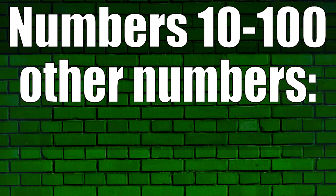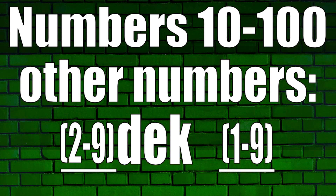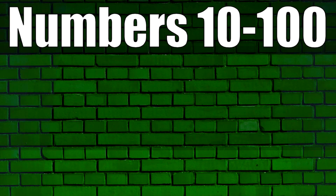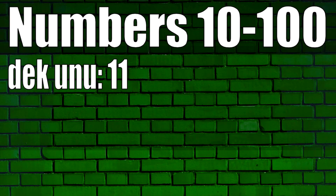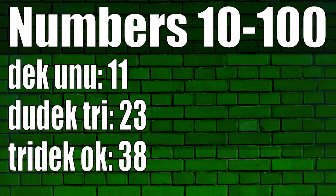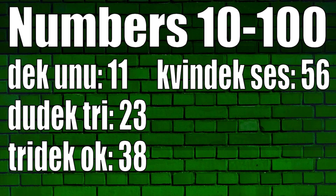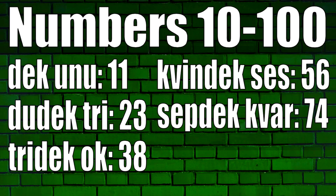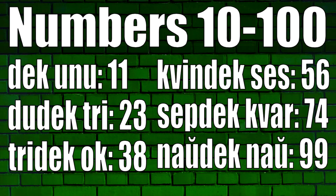For all the other numbers in between, you just say a multiple of 10 plus any number from 1 through 9 with a space in between. Some examples: dudek du 22, tridek tri 33, kvindek ses 56, sepdek kvar 74, naudek nau 99.